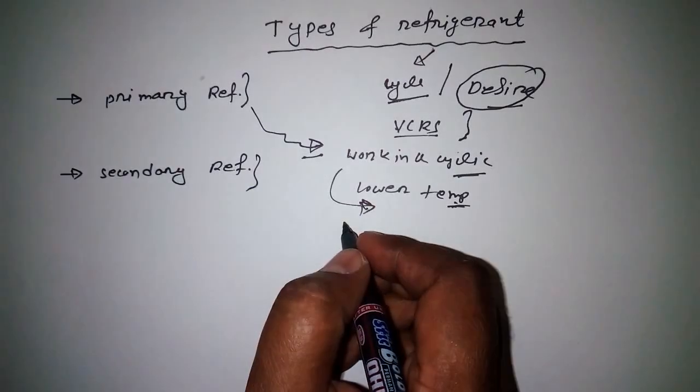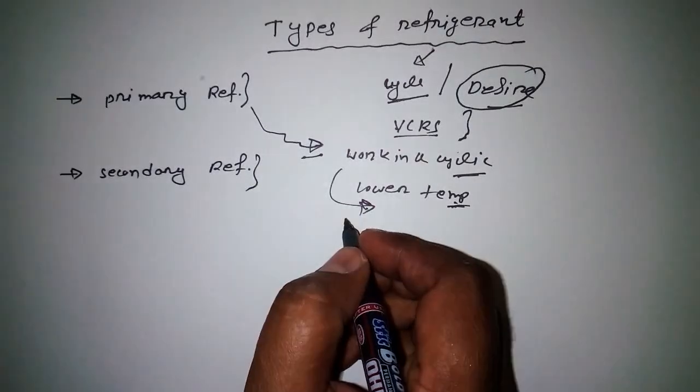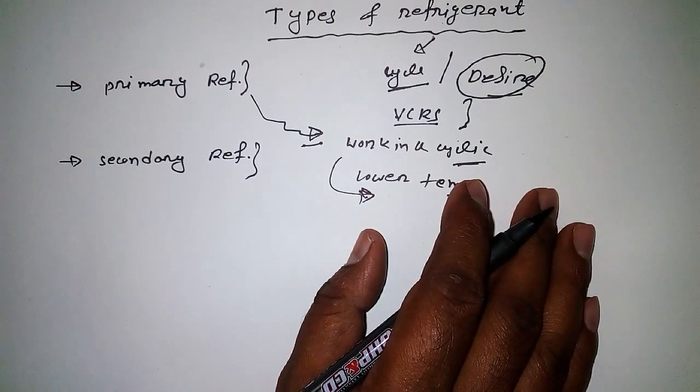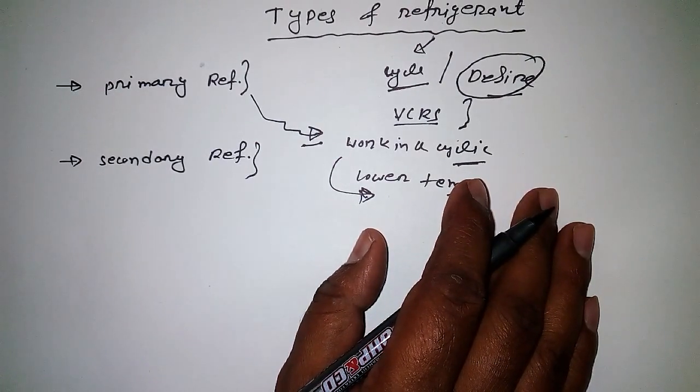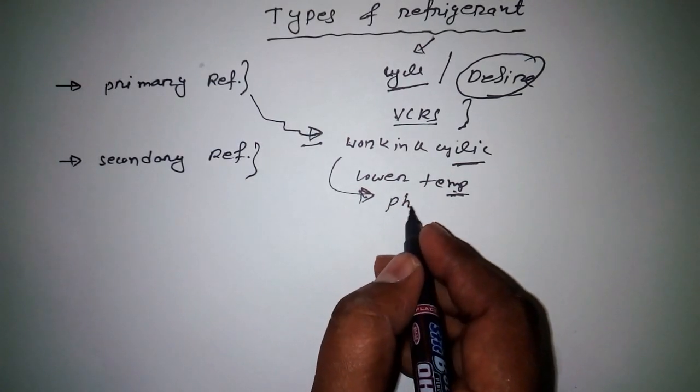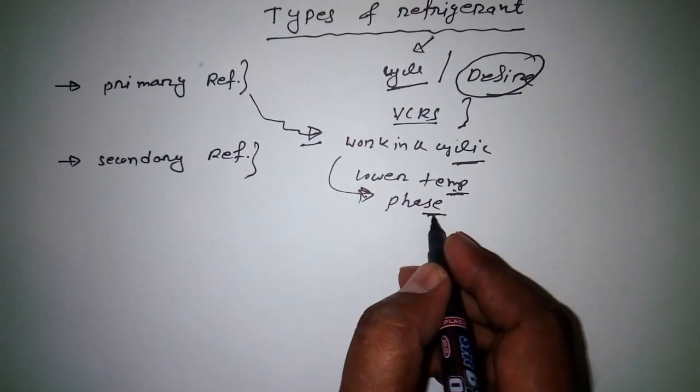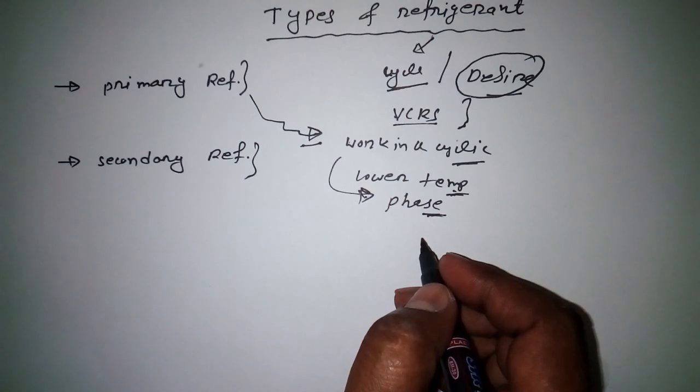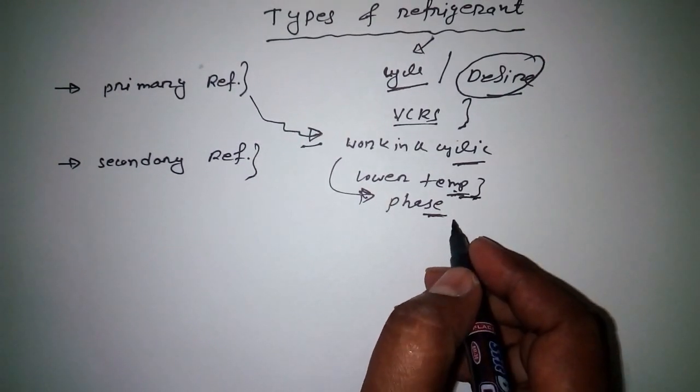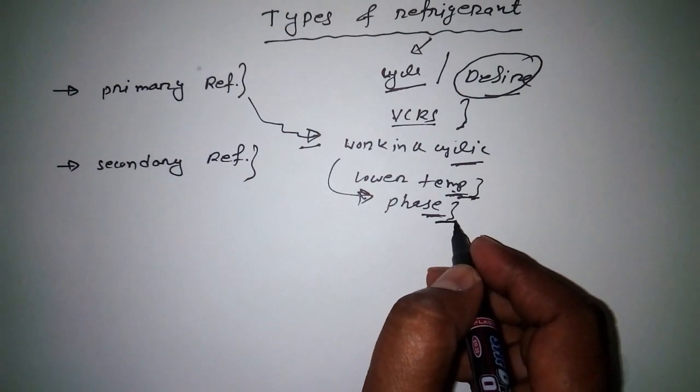That is latent heat of transformation, which means change of phase is taking place. So there are two important things: it is useful for getting lower temperature, and phase change is taking place in case of primary refrigerant.